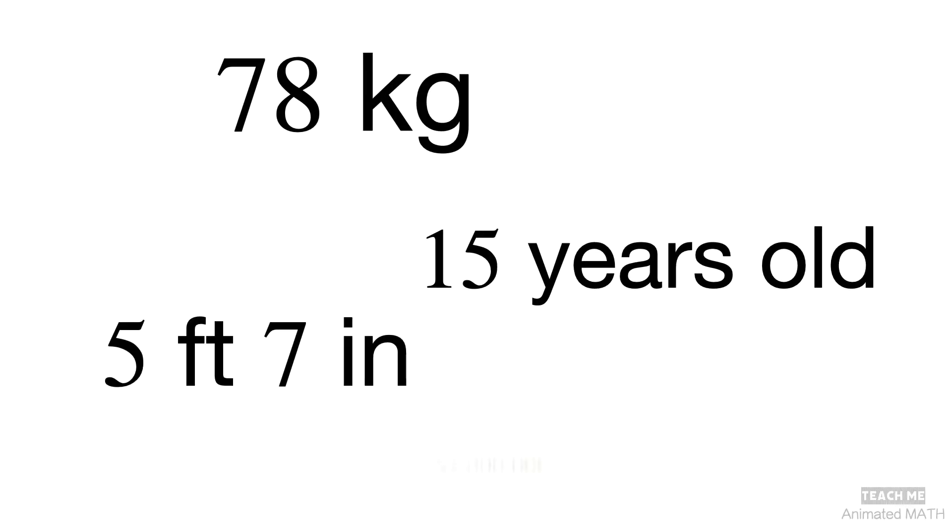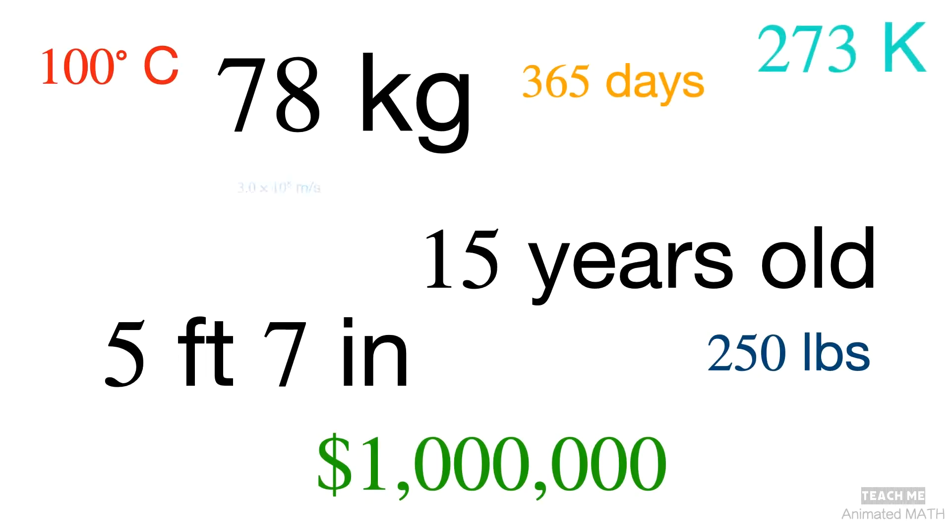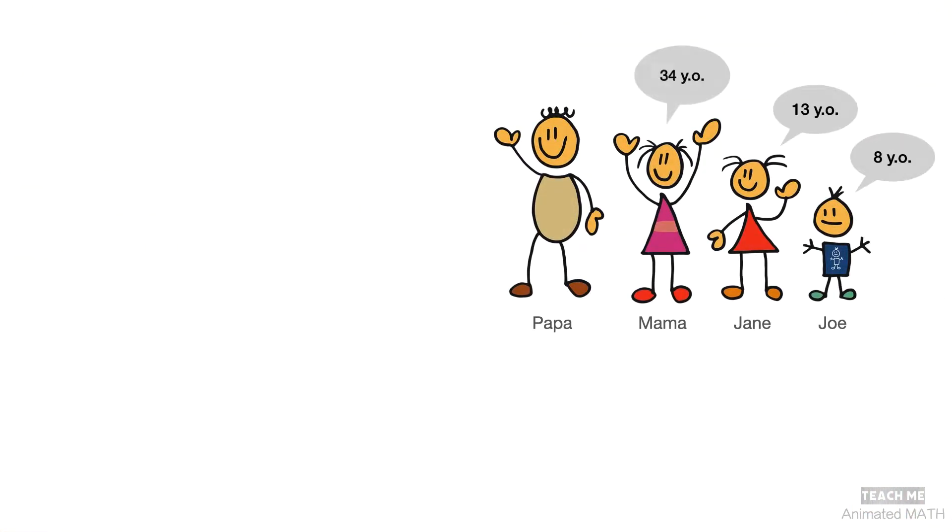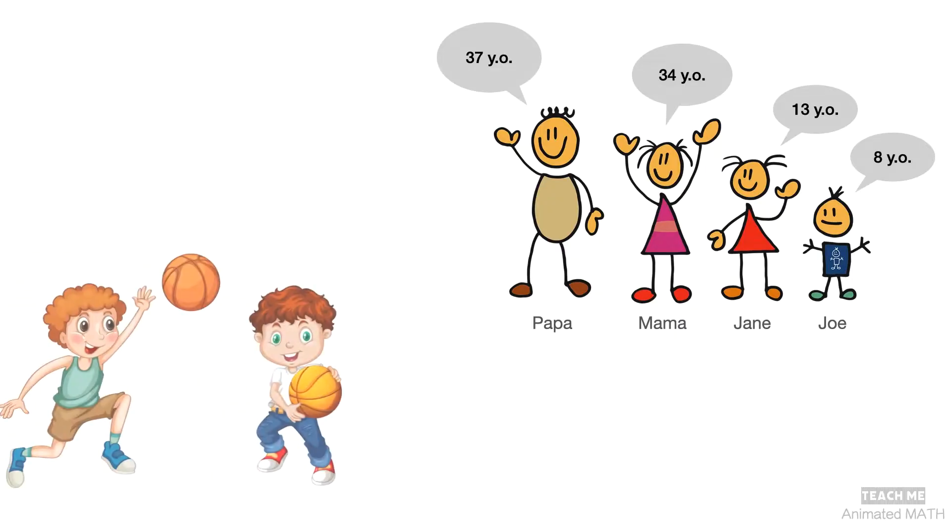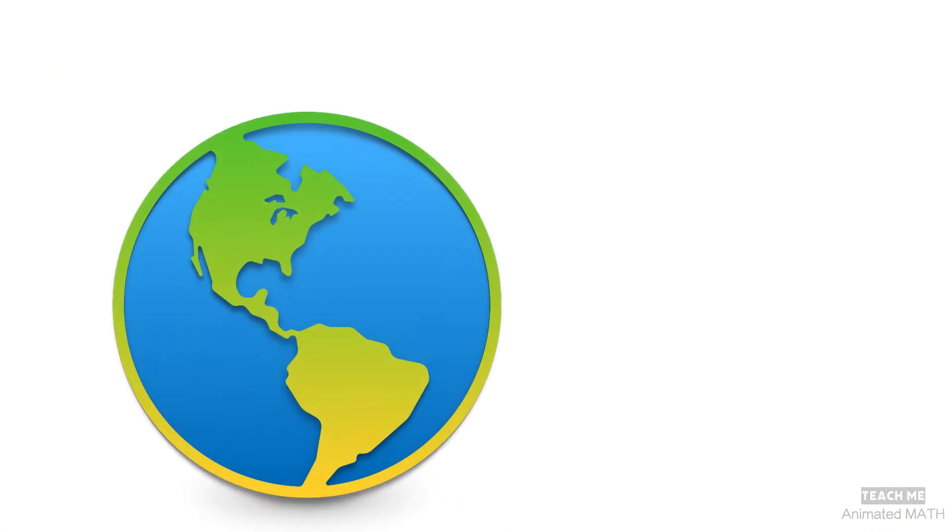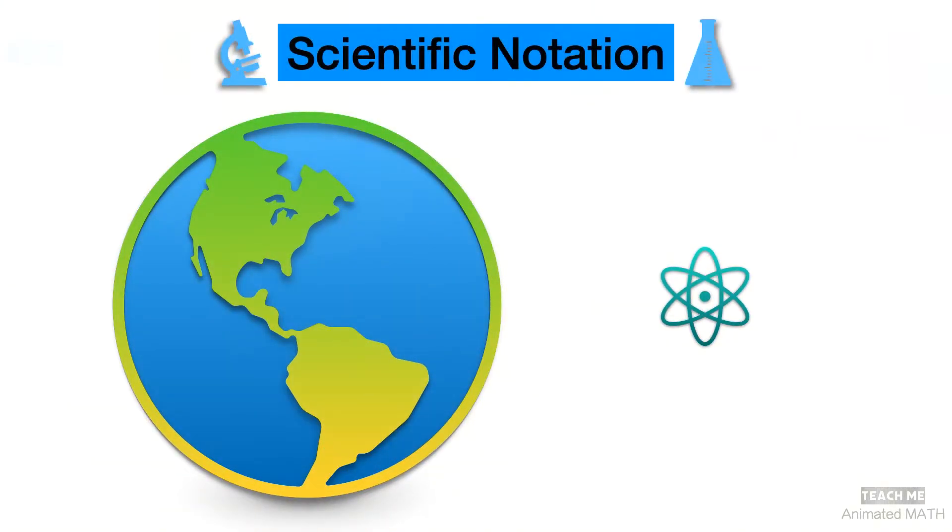Numbers are symbols we use to represent quantity in the real world. It's easy to count your age or the score of teams in a basketball game. But how do you represent measurements of something as big as the Earth, or as small as an oxygen molecule? We use scientific notation.